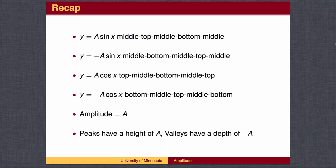To recap, you should now be able to draw the graph of a sine or cosine wave multiplied by a constant, perhaps a negative constant. If the amplitude is a, then the peaks have a height of a, and the valleys have a depth of negative a.